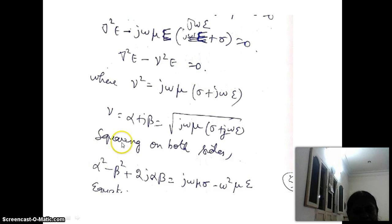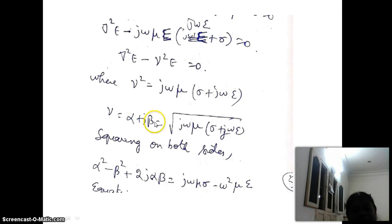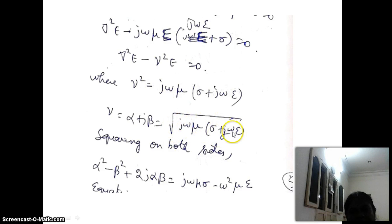Gamma is the propagation constant, obtained by taking the square root: gamma equals alpha plus j beta equals the square root of j omega mu times (sigma plus j omega epsilon). Here, alpha is the attenuation constant and beta is the phase constant.